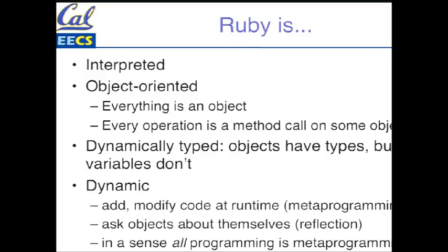It is dynamically typed. What does that mean? Besides the fact that it means you can't tell the type of things with certainty until runtime, it means that although objects do have types, the variables that refer to them don't have types. So if you're coming from Java, this is gonna seem weird. If you're coming from Python, you've probably already seen this. We'll do examples of all of this stuff.